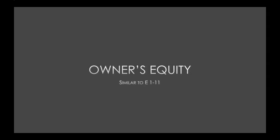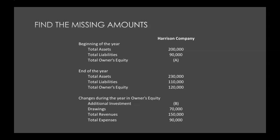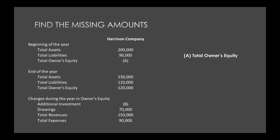Let's work on an example problem where we're finding the missing pieces of owner's equity. This is similar to exercise 1-11. We're given some information about Harrison Company, and we need to figure out our total owner's equity at the beginning of the year, and then find what was the additional investment that happened during the year. Let's first figure out our owner's equity at the start of the year.